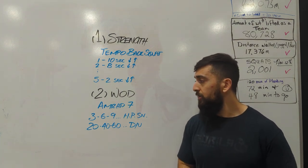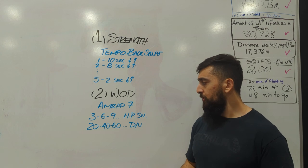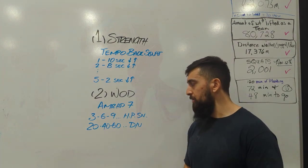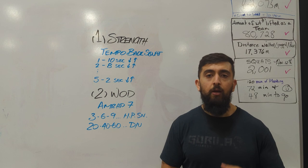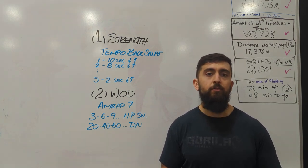After that, the workout is an AMRAP 7. We've got 3 hang power snatches, then 20 double unders, then 6 and 40 and 9 and 60. You're going to keep going through that pattern for 7 minutes.